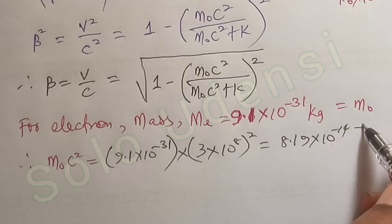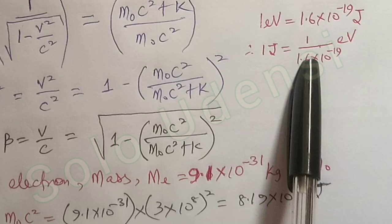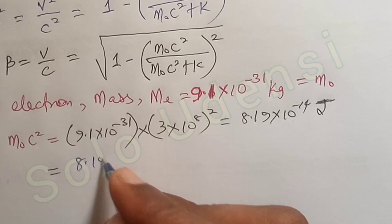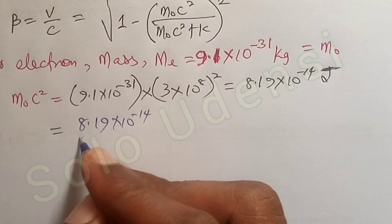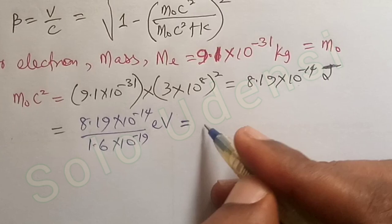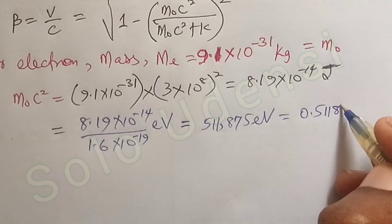So if we now use this formula to change it to electron volts — converting joules to electron volts by dividing — we get 8.19 times 10 to the minus 14 over 1.6 times 10 to the minus 19 electron volts. That equals 511,875 electron volts, or 0.511875 mega electron volts.